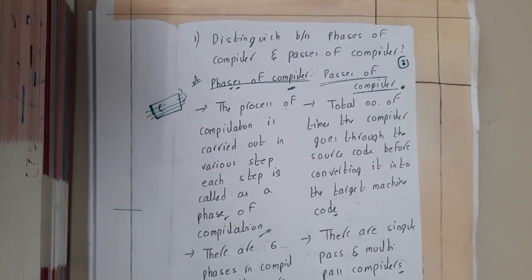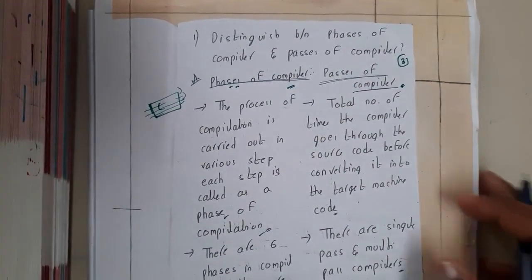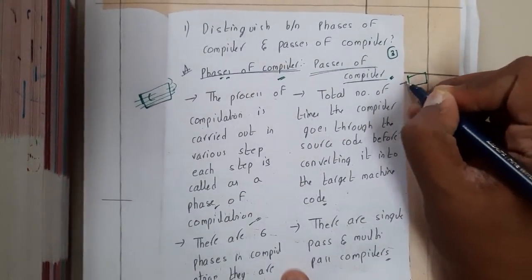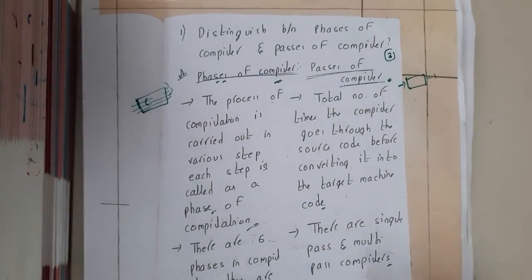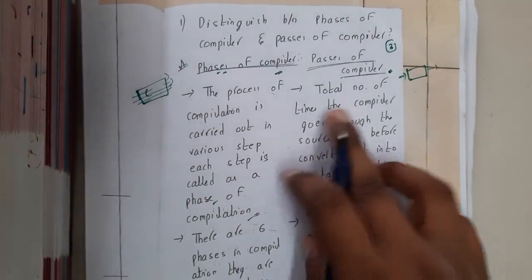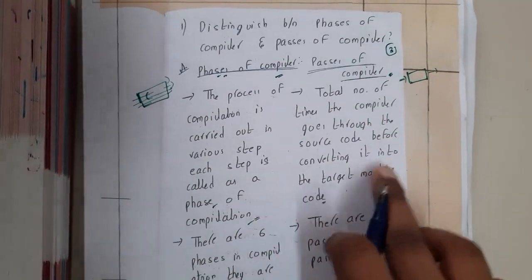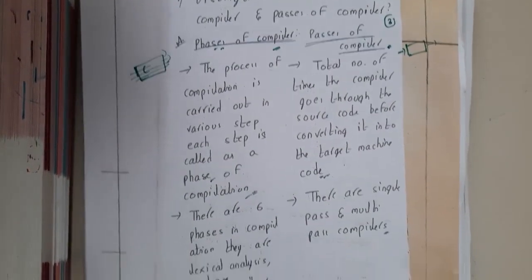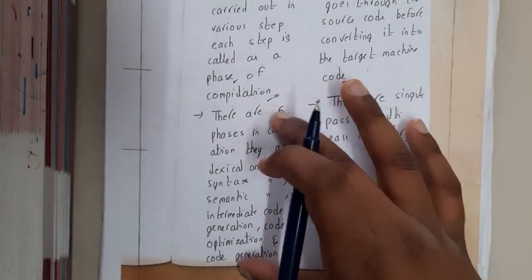Similarly, passes of a compiler: how many times your code goes through that compiler is nothing but the passes of the compiler. The total number of times the compiler goes through the source code before converting it into machine code is nothing but the passes of the compiler.